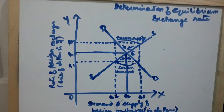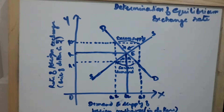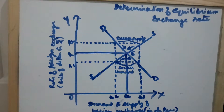In this video we see how exchange rate is determined. The exchange rate is determined at the equilibrium level. Flexible exchange rate is determined by the intersection of the forces of demand and supply of foreign exchange. The equilibrium exchange rate is determined at a level where demand for foreign exchange is equal to the supply of foreign exchange.